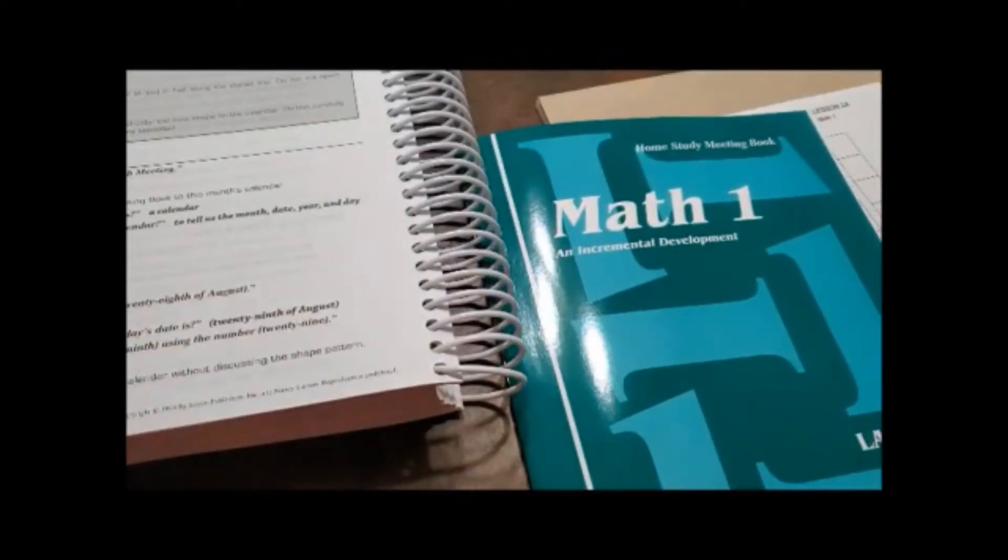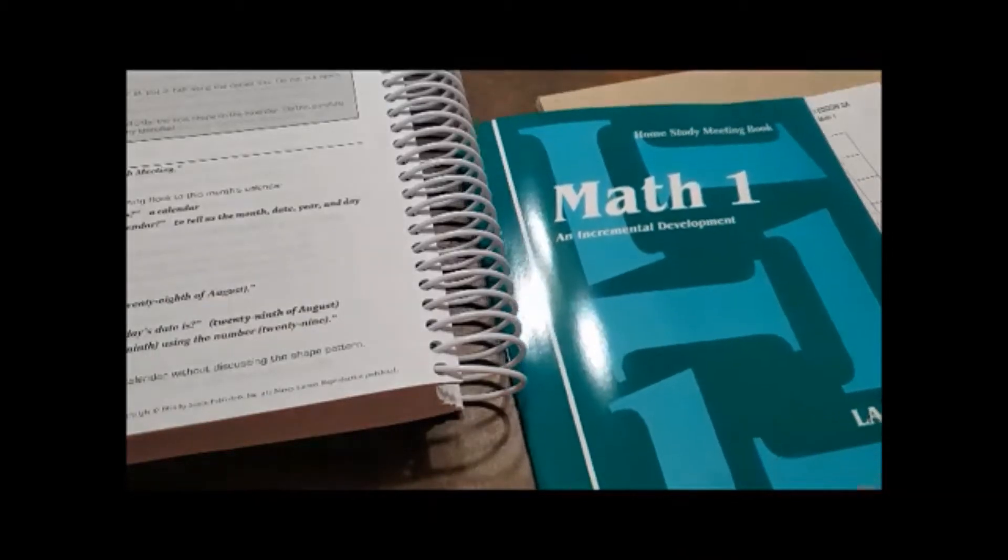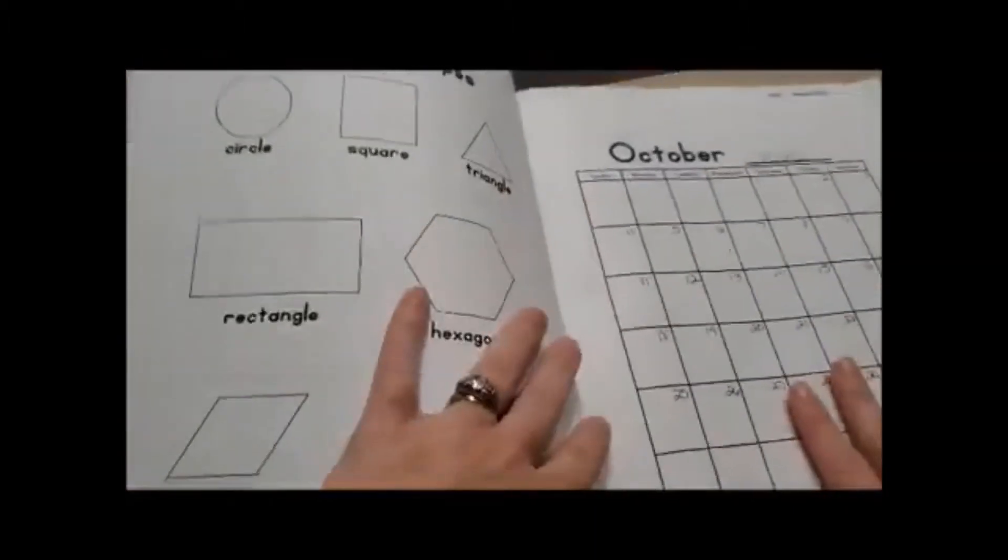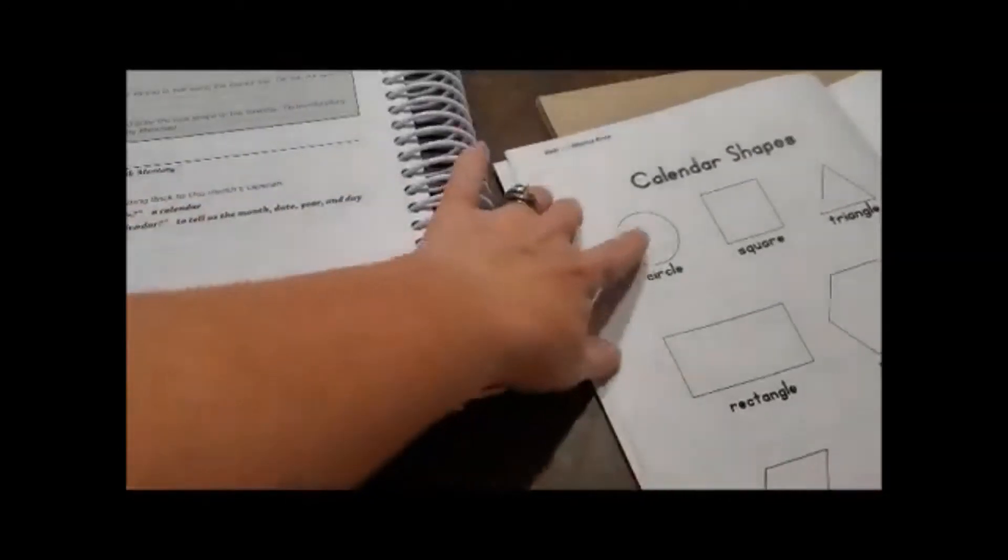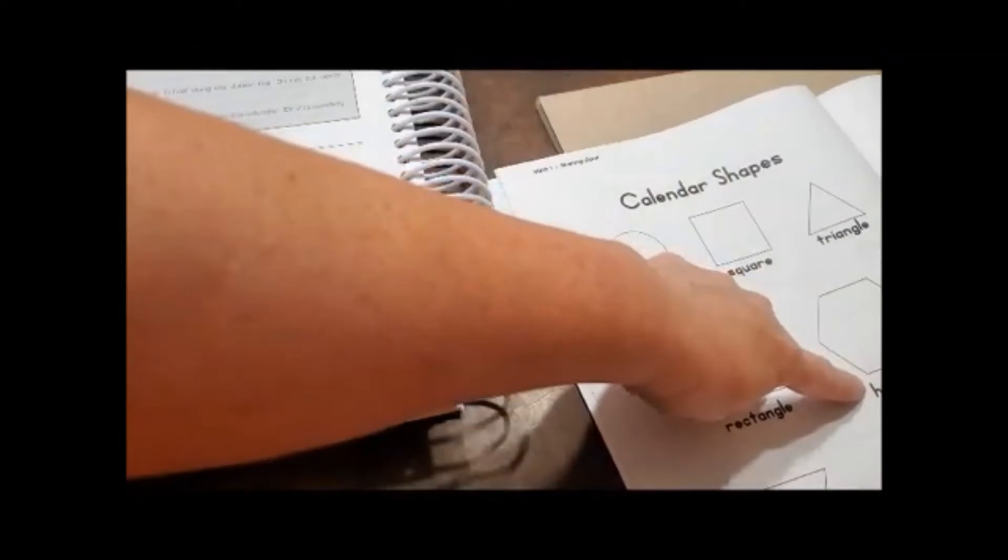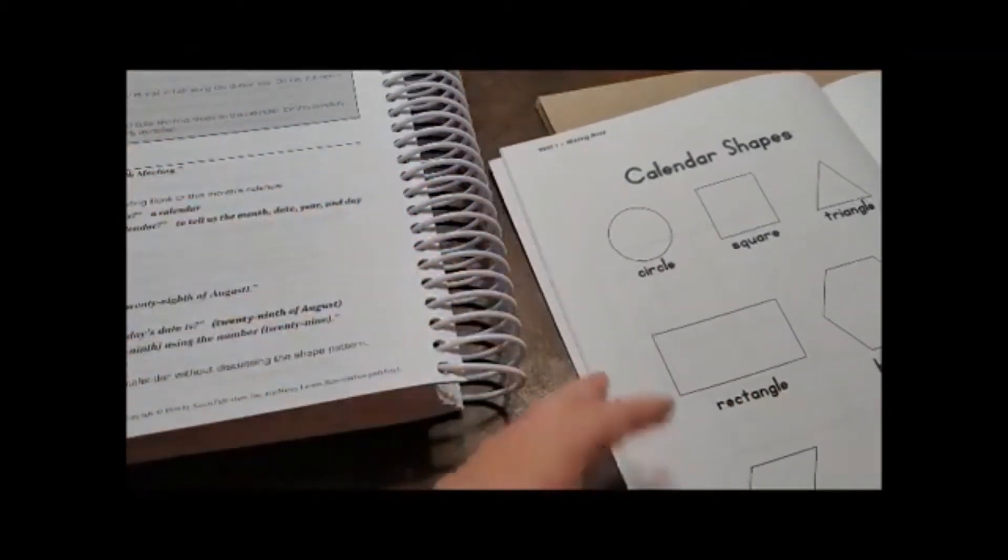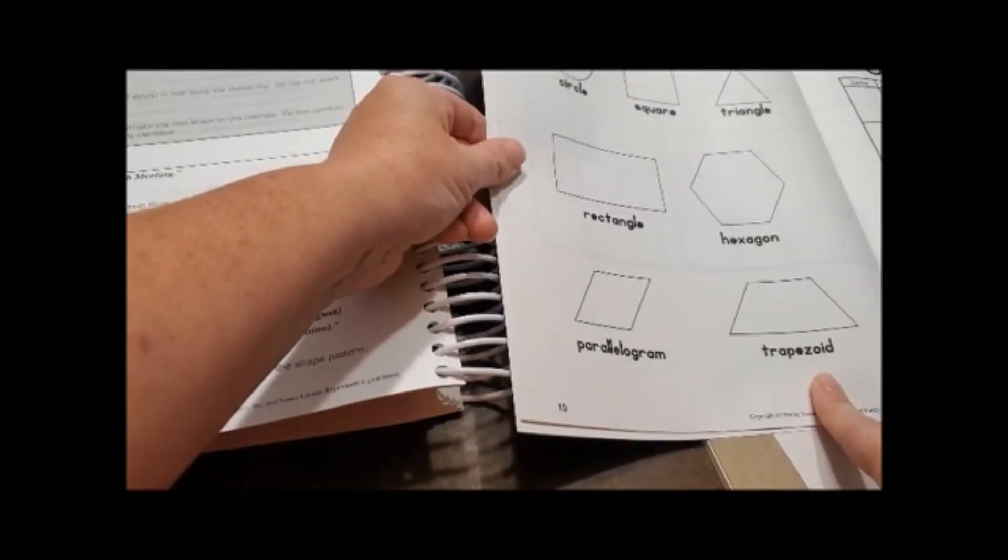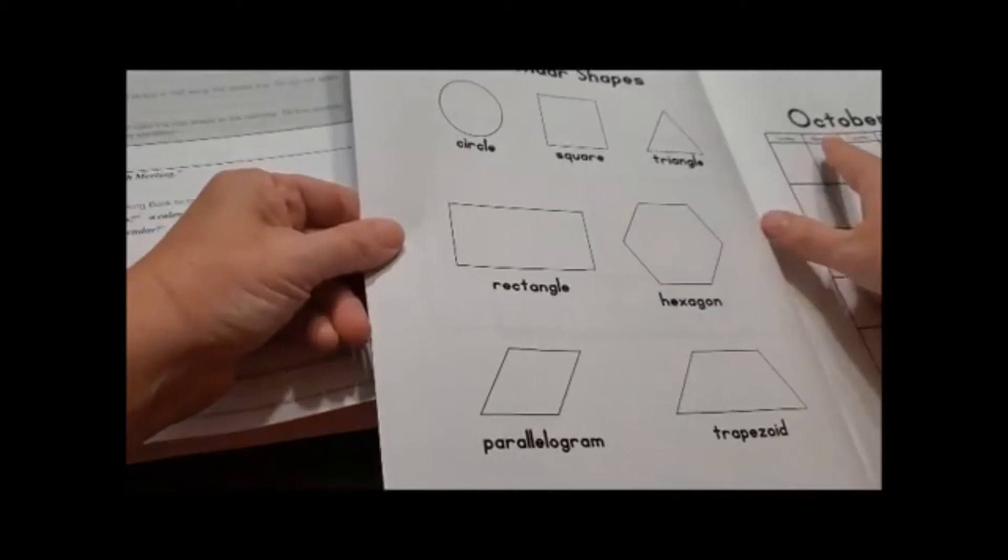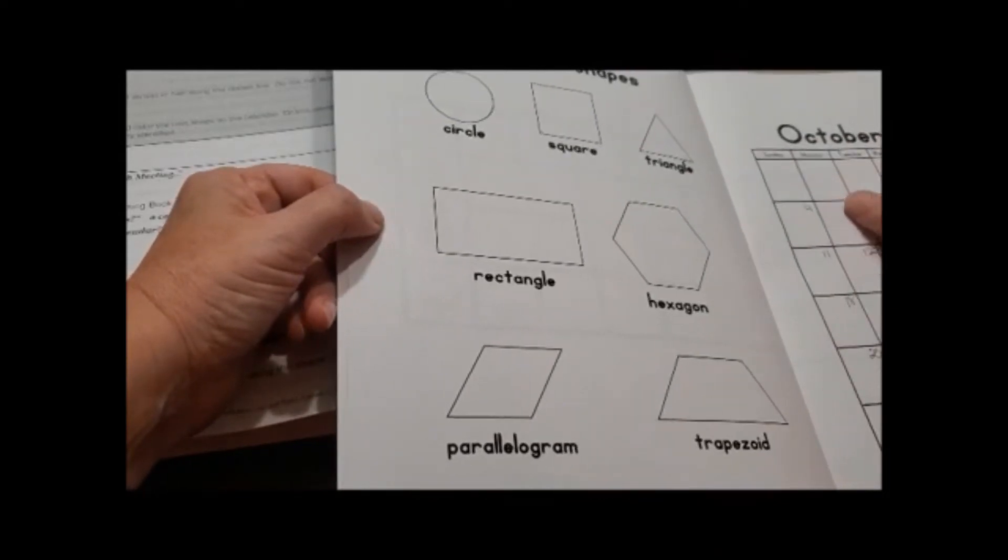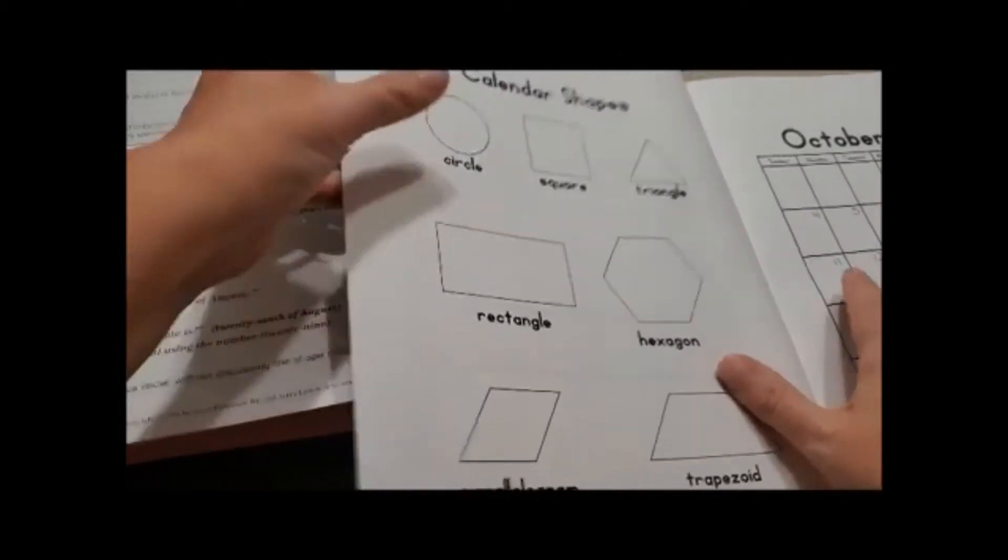Okay in today's video we are doing do a lesson with us on Saxon math level one. This is first grade with Becca. So we're going to start with our meeting book. And what we do on that is we open it up to the month that we are on. We are currently on October. And we're going to talk about our shapes. What are our shapes? Circle, square, triangle, rectangle, hexagon, parallelogram, trapezoid. And so we are going to do a pattern of all of these shapes.